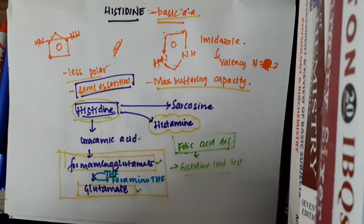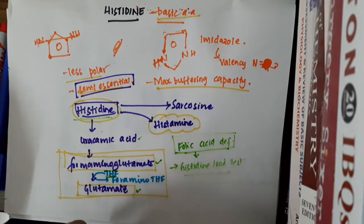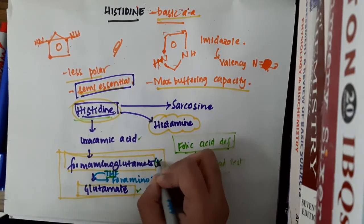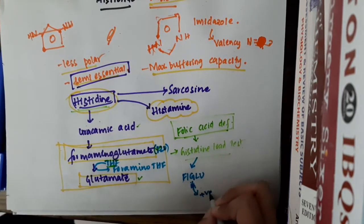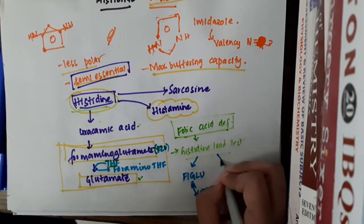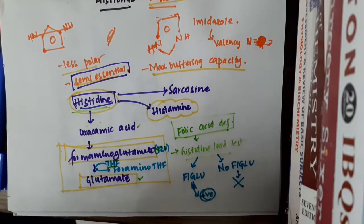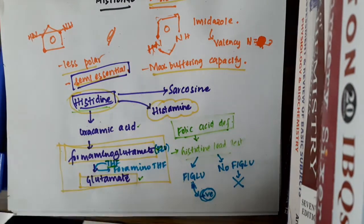Since tetrahydrofolate is absent due to folic acid deficiency, this conversion is not seen. So in the histidine load test, if you see elevated FIGLU — formiminoglutamate — levels in the urine, then it is positive for folic acid deficiency. If there are no formiminoglutamate levels in urine, then obviously there is no folic acid deficiency. This histidine load test is used to diagnose folic acid deficiency, and a positive result shows increased levels of formiminoglutamic acid.